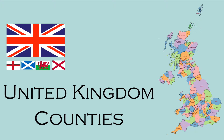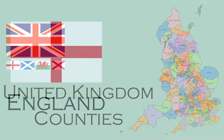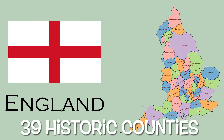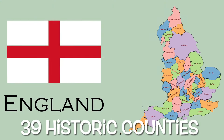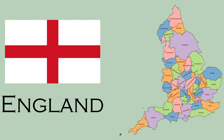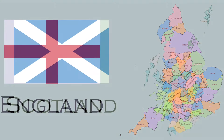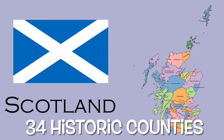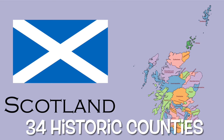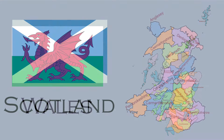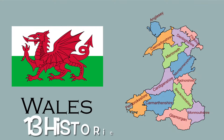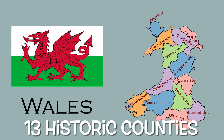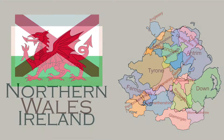The traditional counties of England, Scotland, Wales and Northern Ireland are 92 historic subdivisions of the United Kingdom. They are also known as the historic, ancient or geographical counties. The historic counties, so-called because they have a lot of history, have existed over 1,000 years in some cases and many centuries in others.